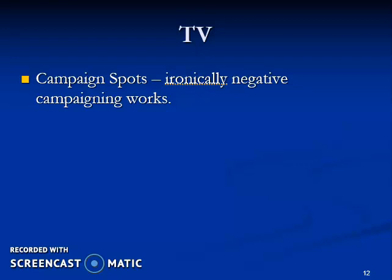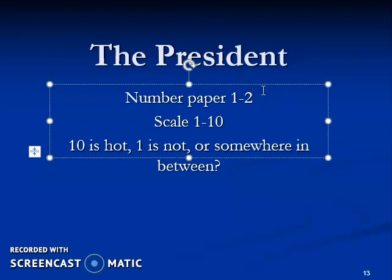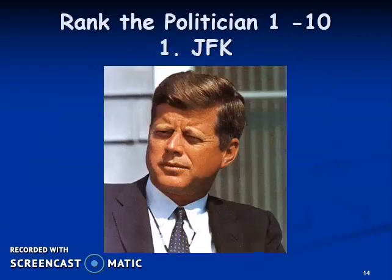What we want to do right now is have you get a piece of scratch paper and number it 1 through 23. You can pause this while you do that. Then you're going to rate 23 individuals I'll show you on a scale of 1 to 10 — 10 being attractive and 1 being not — or somewhere in between. This will all have some bearing that we'll explain afterward.